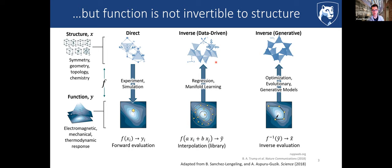Some new approaches have become popular in recent decades. One approach is data-driven inversion or data-driven modeling, where we try to interpolate between observations and find structures with a particular value of the modulus we're interested in. We can do this using regression models or unsupervised methods like manifold learning to understand how different structures relate to each other, then do interpolation in that space — we're not truly inverting the property back to a structure, but rather looking between known structures to find precisely the value we want.